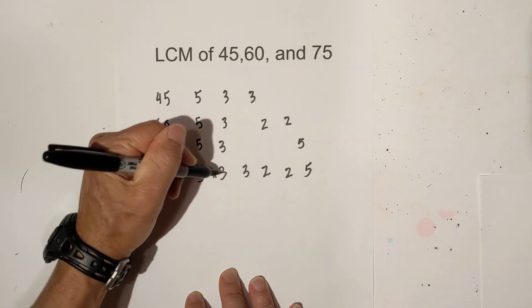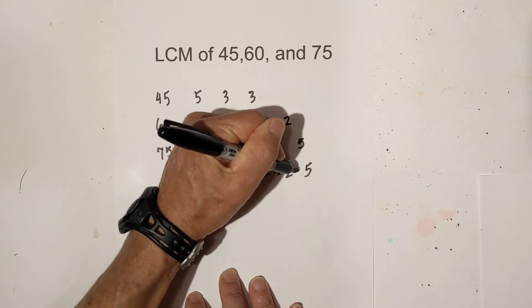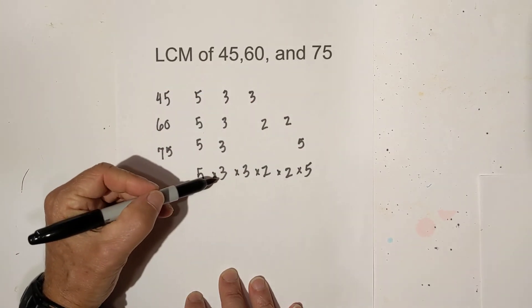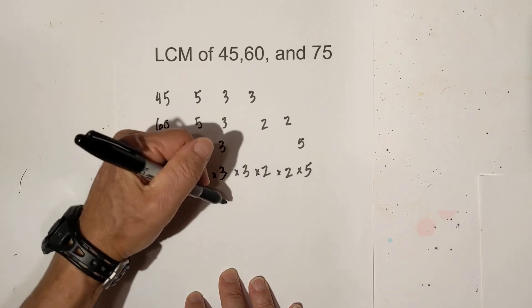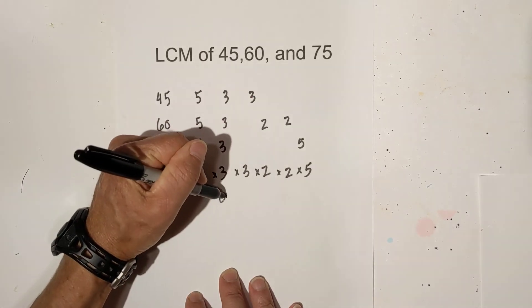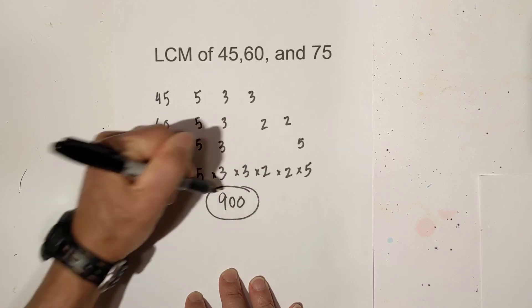And now all you do for the LCM is just multiply all these numbers together. 5 times 3 is 15. Then times 3 is I think that's 45, et cetera. And when you multiply all these numbers together it equals 900.